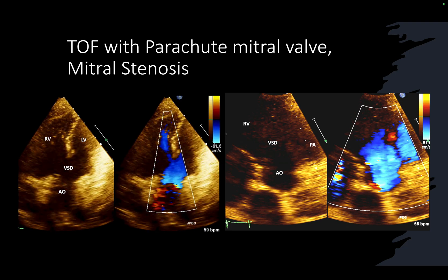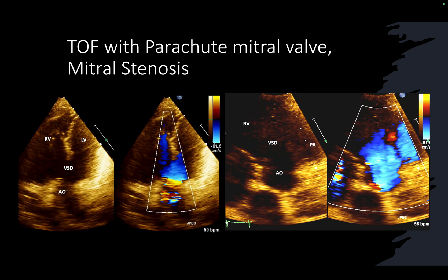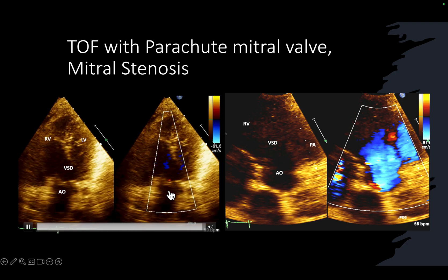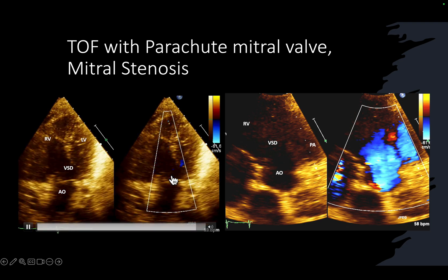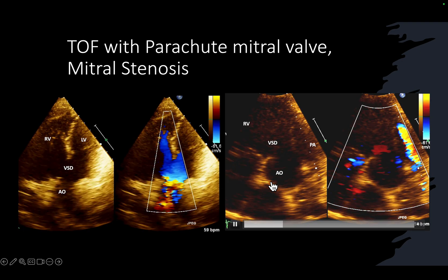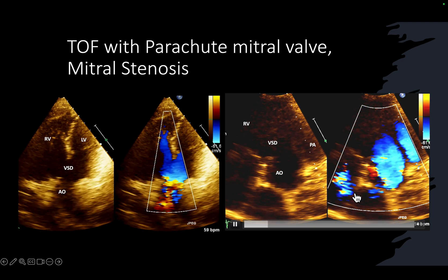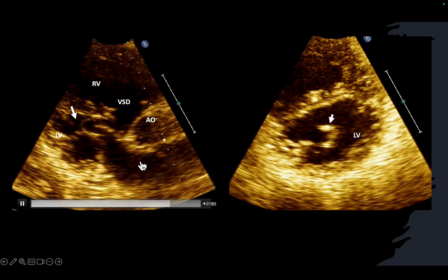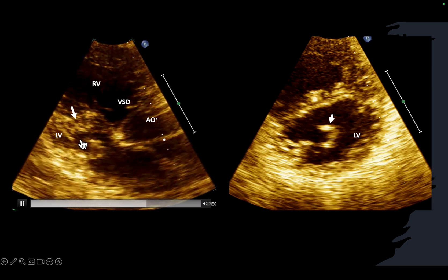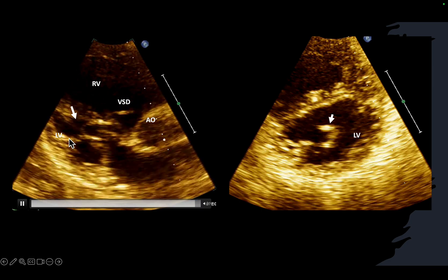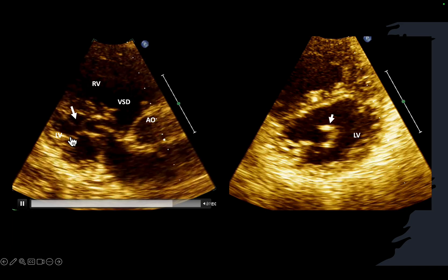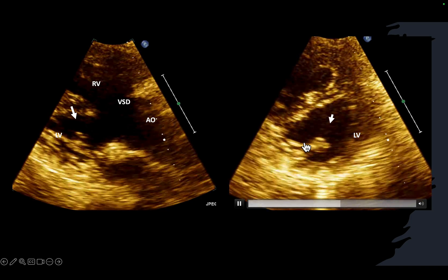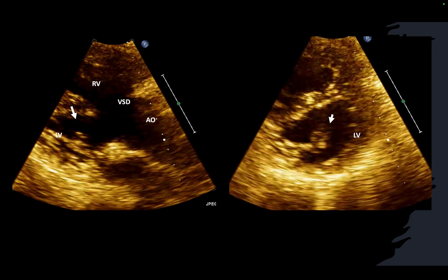Then you see this patient with tetralogy of Fallot — you see a large VSD, an aortic override from the right ventricle, left ventricle blood going to the aorta, mild aortic regurgitation, pulmonary stenosis, and mild regurgitation. But then you see the mitral valve — you see this kind of chordae. You thought this could be an arcade mitral valve, but this is attached to a single papillary muscle, which tells us this is a parachute mitral valve.